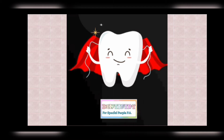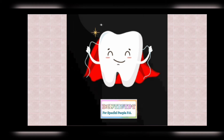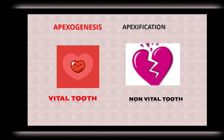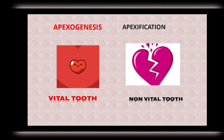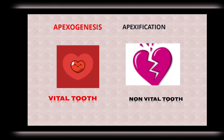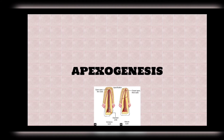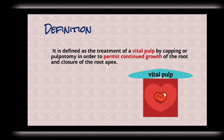Apexogenesis and apexification are the two mainly used procedures in pediatric dentistry. Both deal with an opening in the root apex — one is done in vital teeth and the other in non-vital teeth. 'Apexo' means root and 'genesis' means growth, so apexogenesis is the treatment to help with the growth of the root apex.